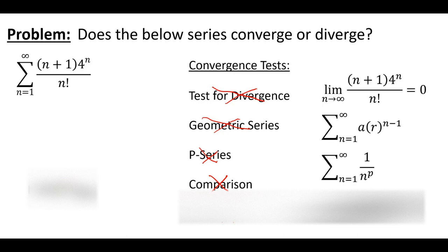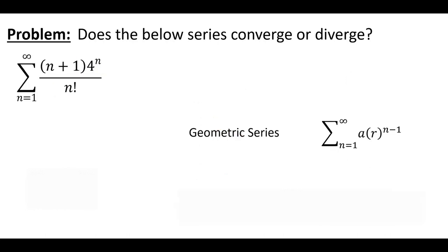Thankfully, we have the ratio test, which is actually going to work. One of the clues here is if you have a factorial and some exponents — these are a good indication that the ratio test might be your friend. And in this case it is. So let's see how that's going to work. But first, let's take a look back at our geometric series.